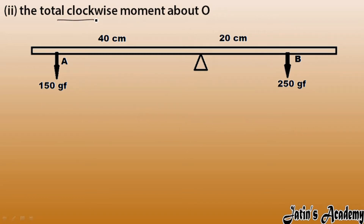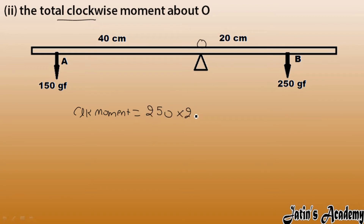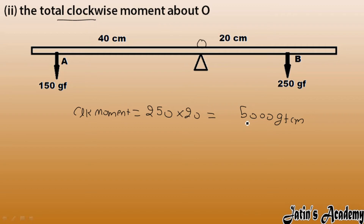Next, we find the total clockwise moment about O. The 250 gram force is creating the clockwise moment. Clockwise moment equals force multiplied by perpendicular distance: 250 × 20 = 5000 gram force centimeter. Since we've labeled it as clockwise, no need to write a negative sign here — we apply the negative sign only when taking the grand total.